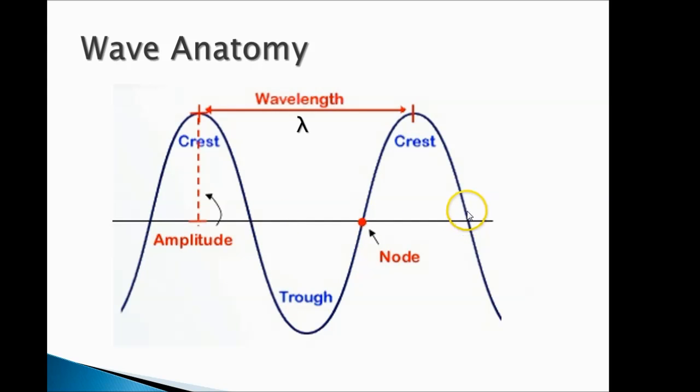So while in a standing wave the crests and the troughs would constantly be switching sides, the nodes themselves are those points right here that don't move at all.